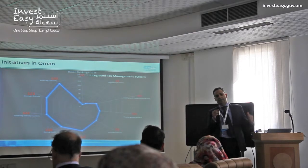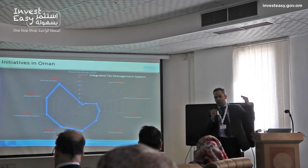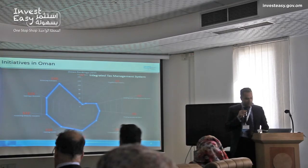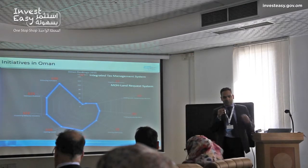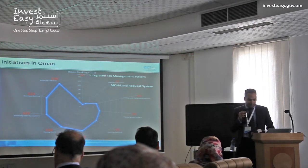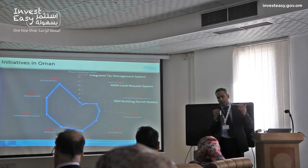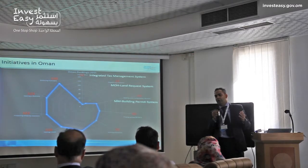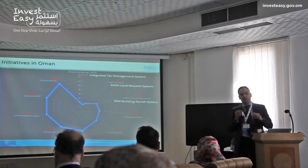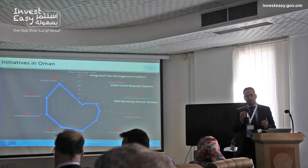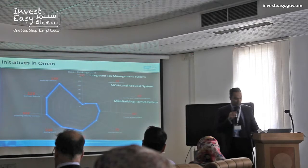We need to keep in mind that not everything is done by the Ministry of Commerce — it is a collective government of Oman. For paying taxes, the Secretary General of Taxation is working on an integrated tax management system which will help improve our ranking. For registering property, the Ministry of Housing has a land request system in a simple application. In Muscat municipality, the building permit system is simplified with an online system that has already processed around 33,000 transactions. They have also engaged EY for process simplification.